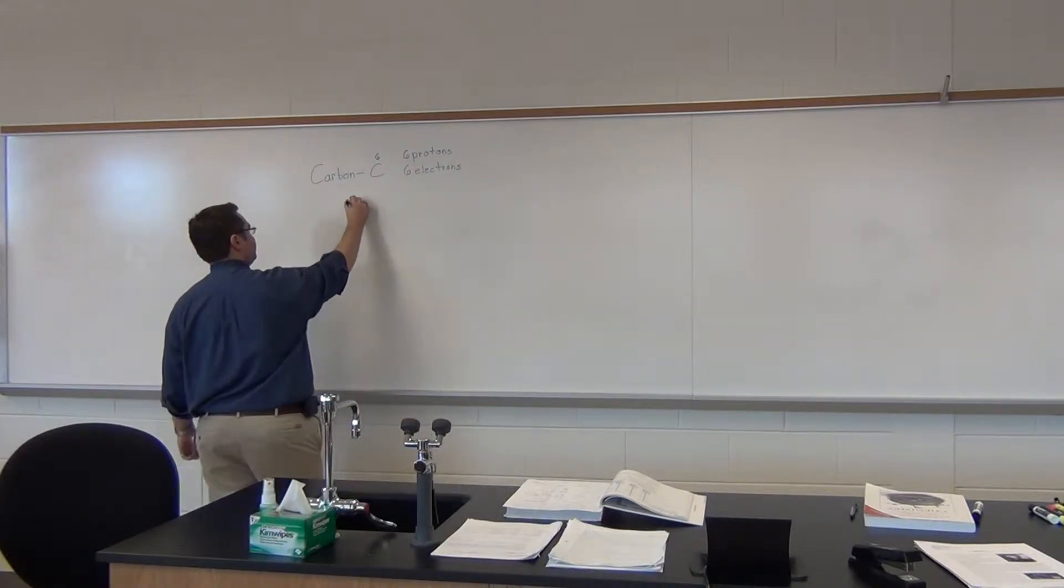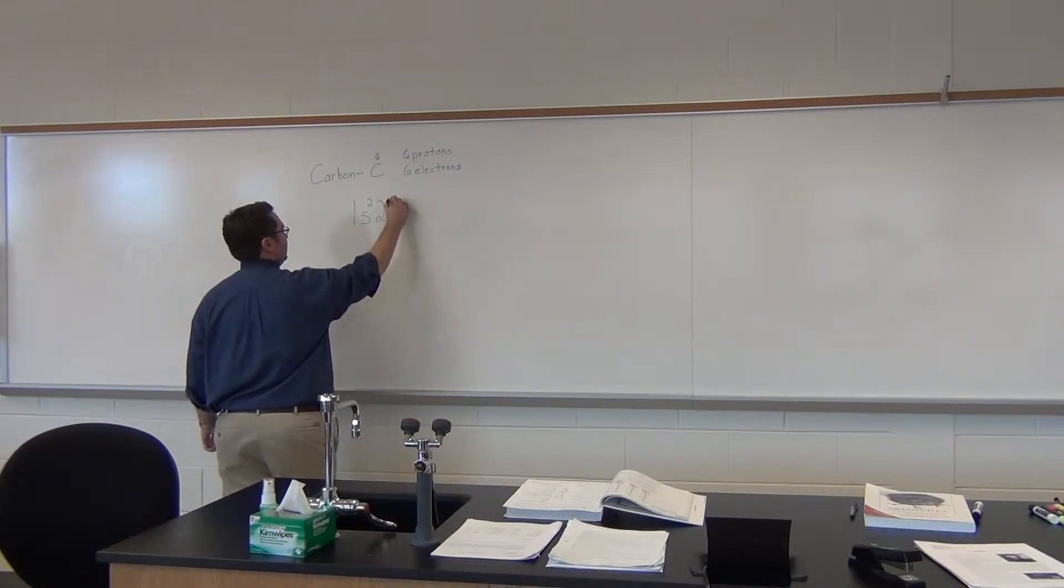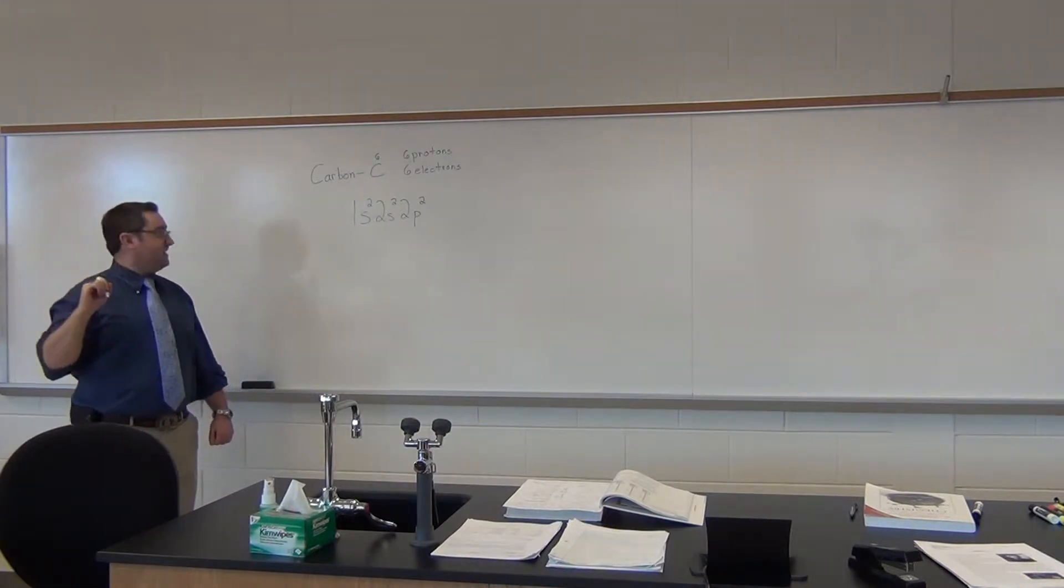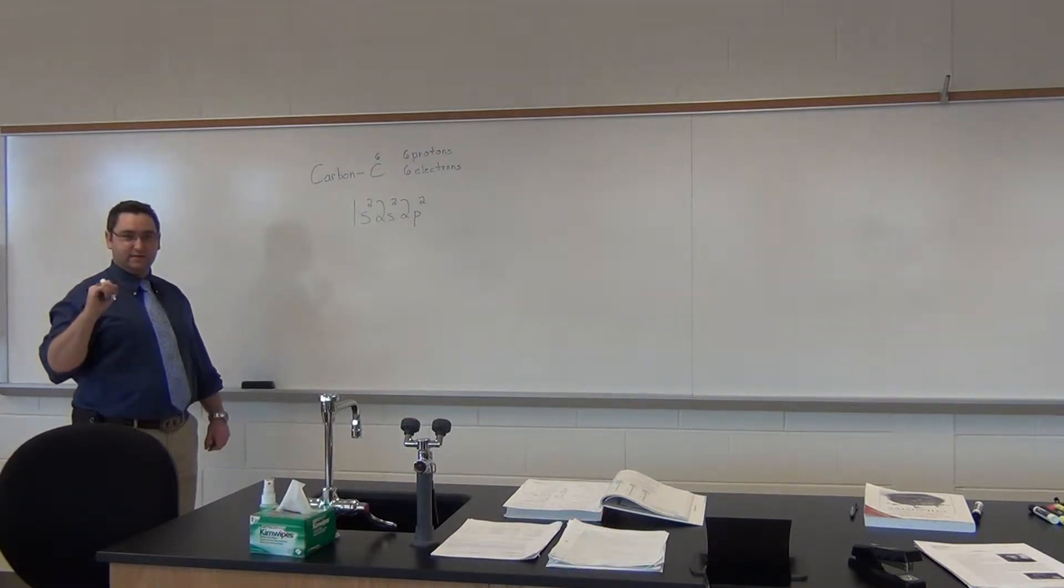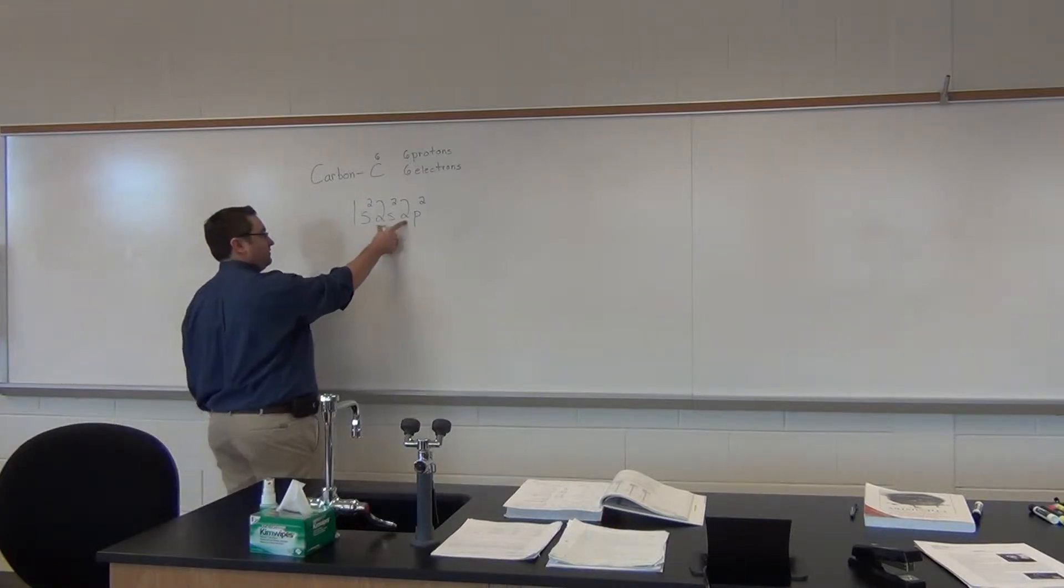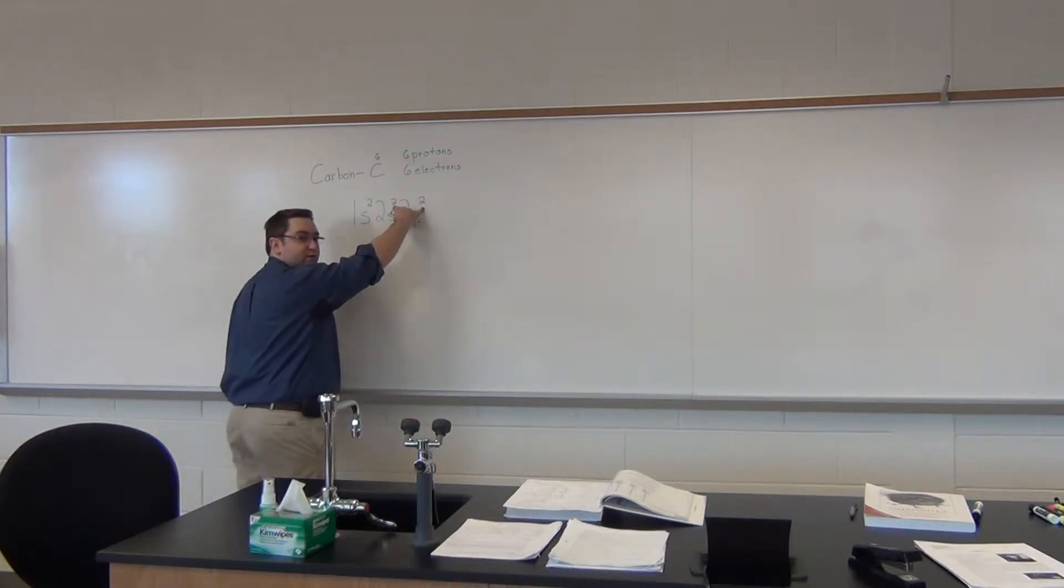So our electron configuration will be 1s² - that one's full - 2s², 2p². How many valence electrons? Four. So we have two as our highest level, we have two and two is four.